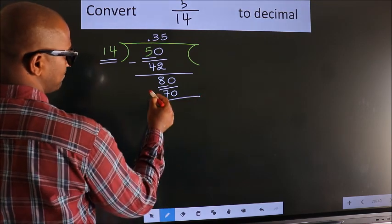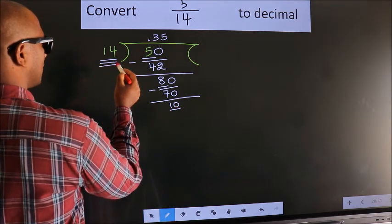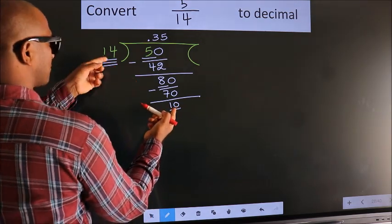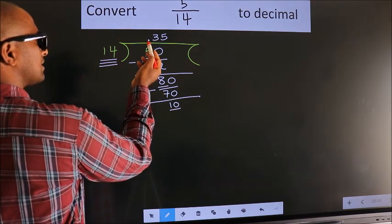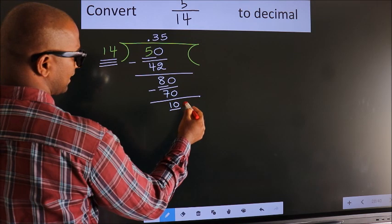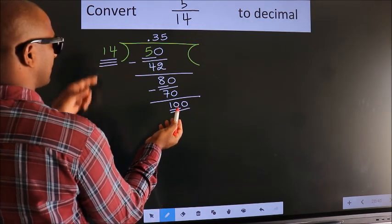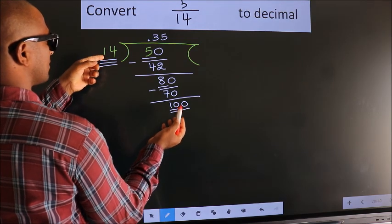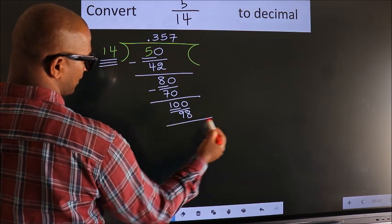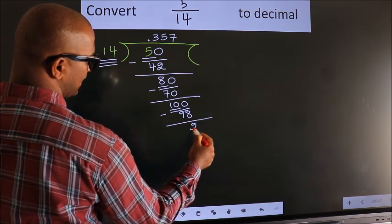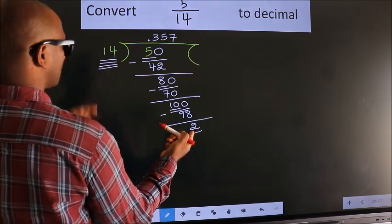We subtract to get 10. We have 10 here; 10 is smaller than 14, and we already have the decimal, so we can directly take 0, making it 100. A number close to 100 in the 14 table is 14 sevens, which is 98. We subtract to get 2.